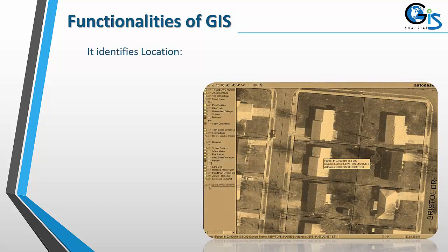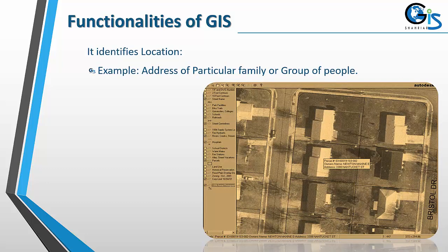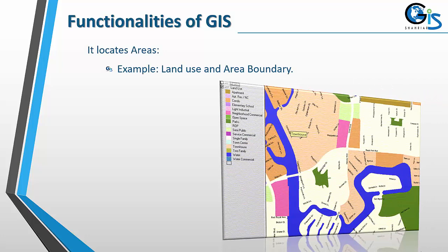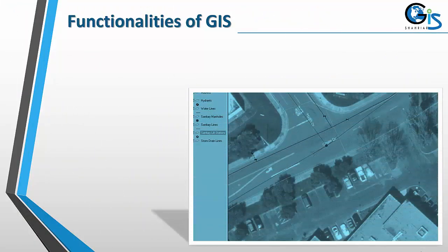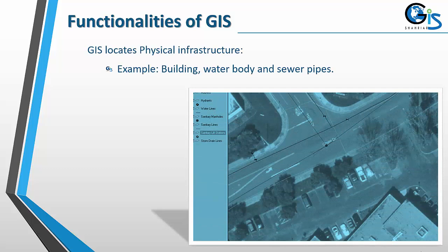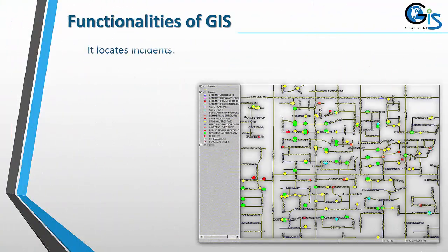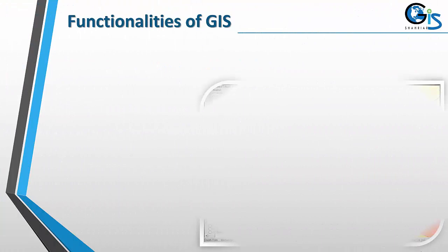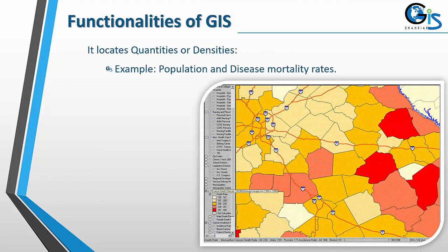Now let's see the functionalities of GIS. GIS identifies location — for example, the address of a particular family or group of people. It locates areas, such as land use and area boundaries. GIS locates physical infrastructure, for example buildings, water bodies and sewer pipes. It locates incidents, such as crime statistics, road accidents and disasters. It also locates quantities or densities, for example population and disease mortality rates.